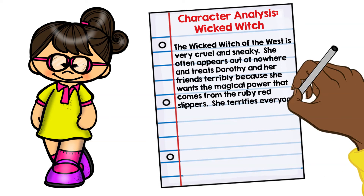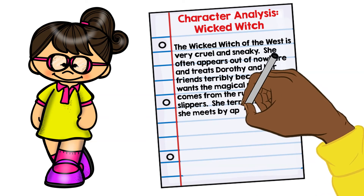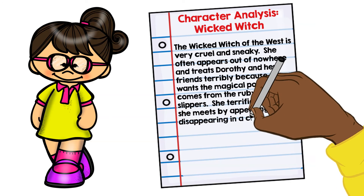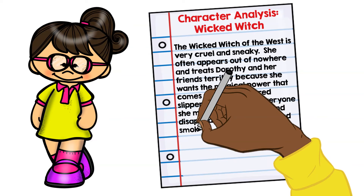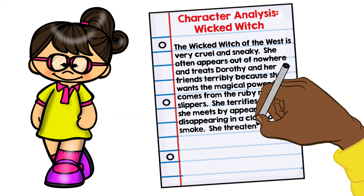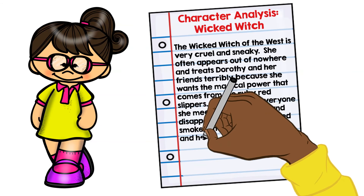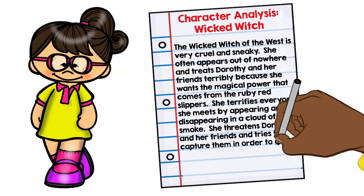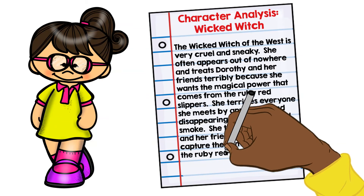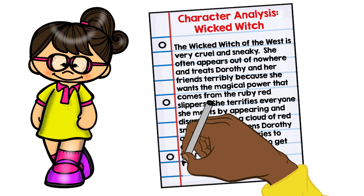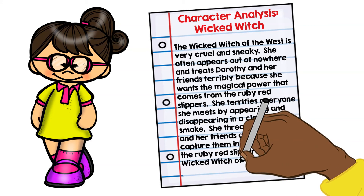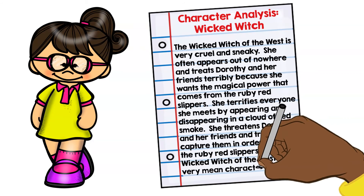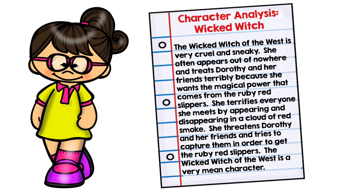She terrifies everyone she meets by appearing and disappearing in a cloud of red smoke. She threatens Dorothy and her friends and tries to capture them in order to get the ruby red slippers. The Wicked Witch of the West is a very mean character.